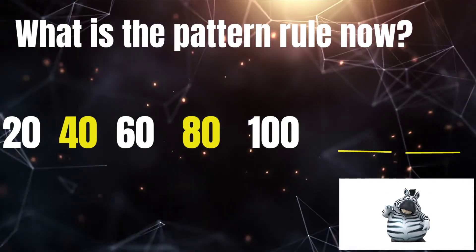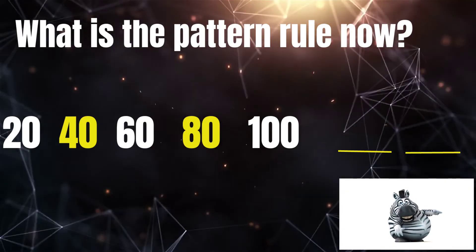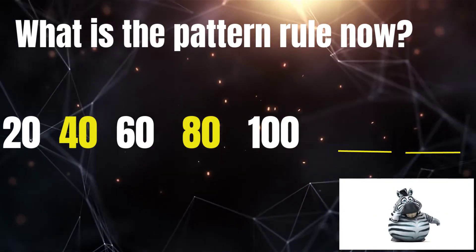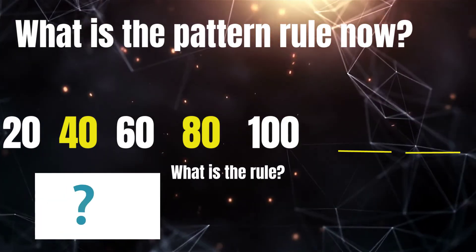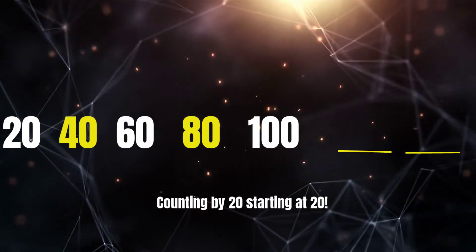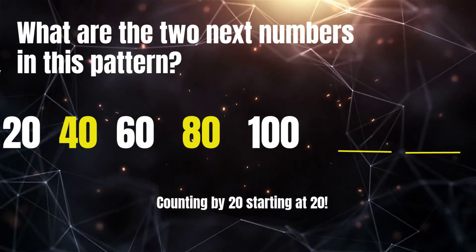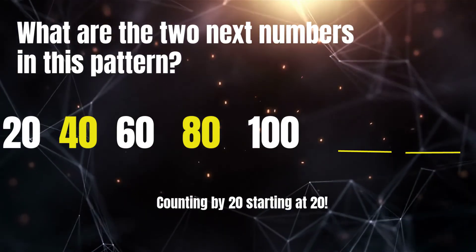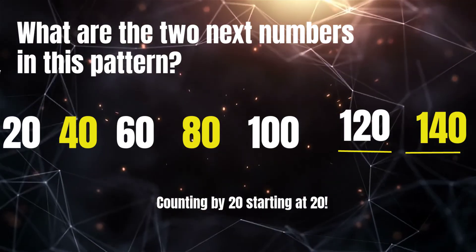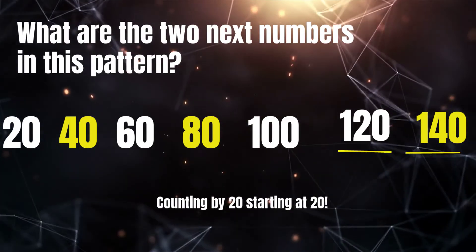What's the pattern rule now? Count with me. Twenty, forty, sixty, eighty, one hundred. What is the pattern rule? Counting by twenty, starting at twenty. You got it. What are the next two numbers in this pattern? 120, 140. Fantastic, my friends. You are really thinking now.